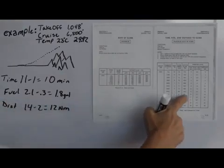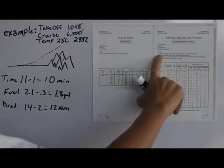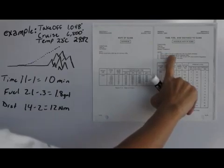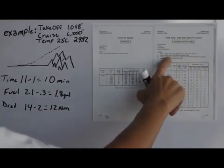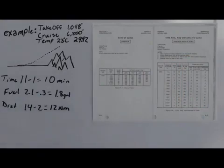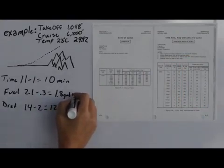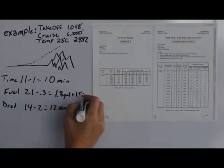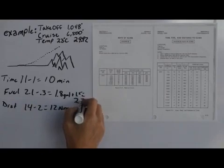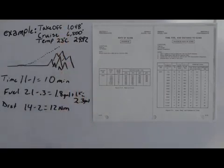Now don't forget to pay attention to the notation section. It says to add 1.1 gallons for fuel for engine start, taxi, and takeoff allowance, but I usually round that number up a bit to be sure that I always have enough fuel. So I would probably add 1.5 gallons to be on the safe side and call my total fuel burn at about 2.3 gallons in order to arrive at my 6,500.